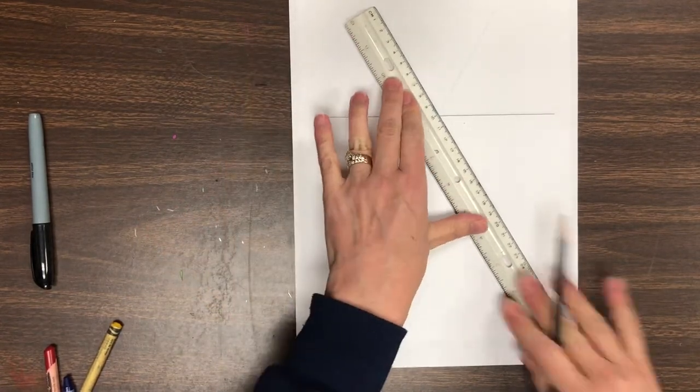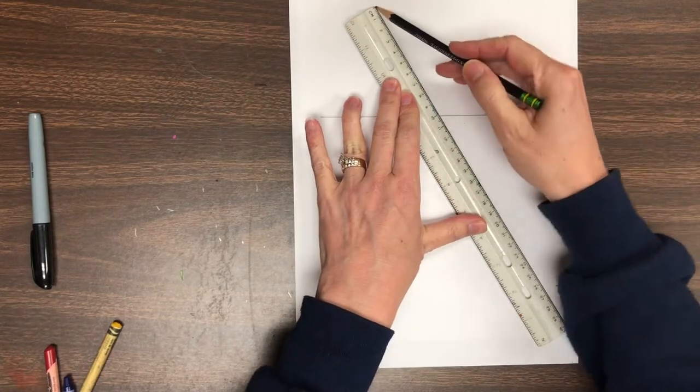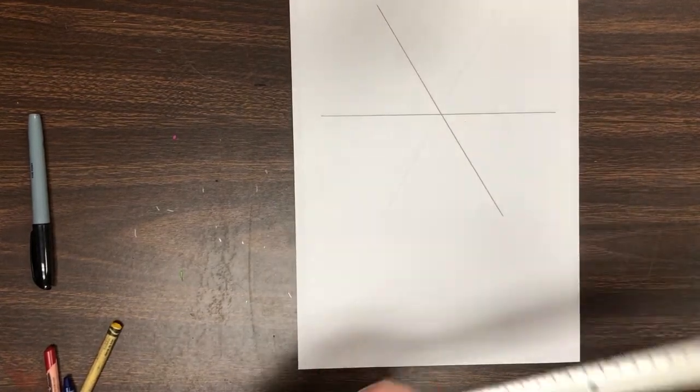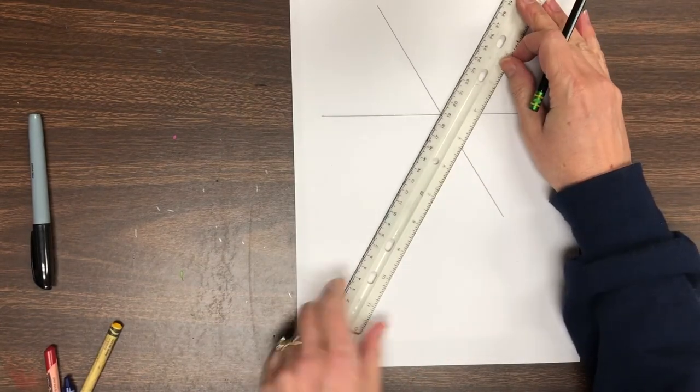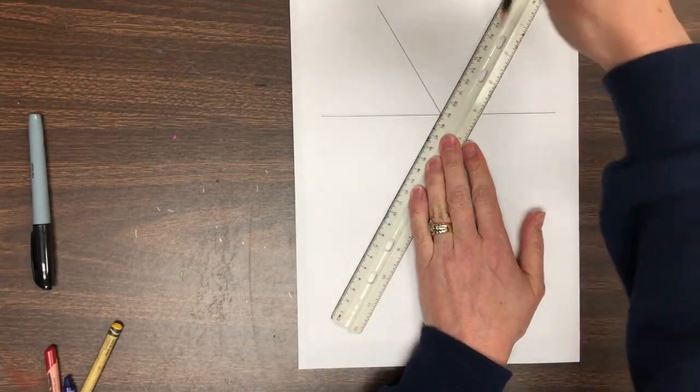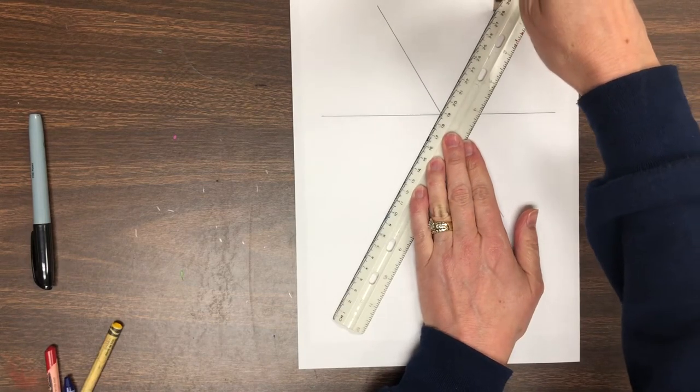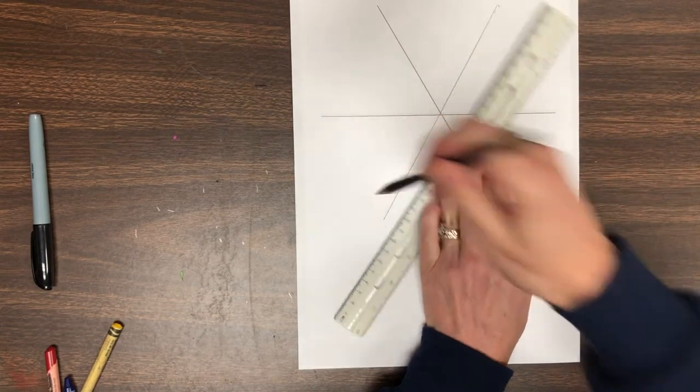Look how I'm taking my non-dominant hand, holding that ruler very firm, and pressing my pencil right up against the ruler when I trace it. So you're going to trace all of those six lines to make the six parts of the umbrella with your pencil.